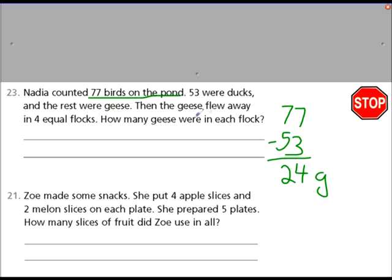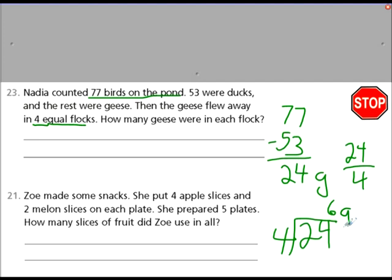But the geese flew away in 4 equal flocks. So we need to take 24, and what do we need to do? 24 out of 4. We need to write that as a division problem. 24 divided by a lesser number equals the quotient. The 4 goes into 24 how many times? 4, 8, 12, 16, 20, 24 equals 6. 6 geese were in each flock. I'll let you figure out Zoe's problem, but remember it's two steps. Figure out the 4 slices and the 2 melons on each plate, and then figure out how many she prepared with 5 plates.